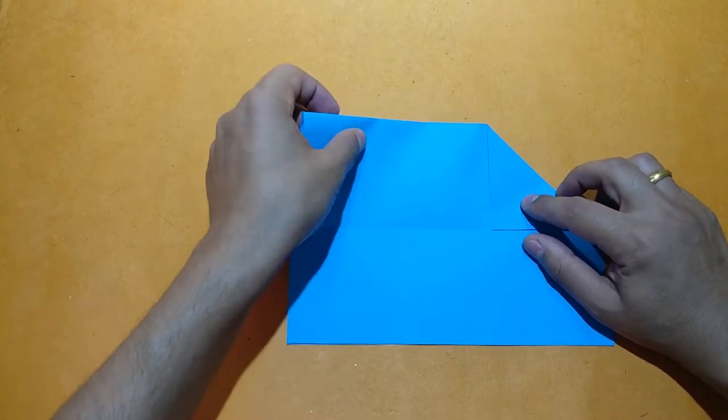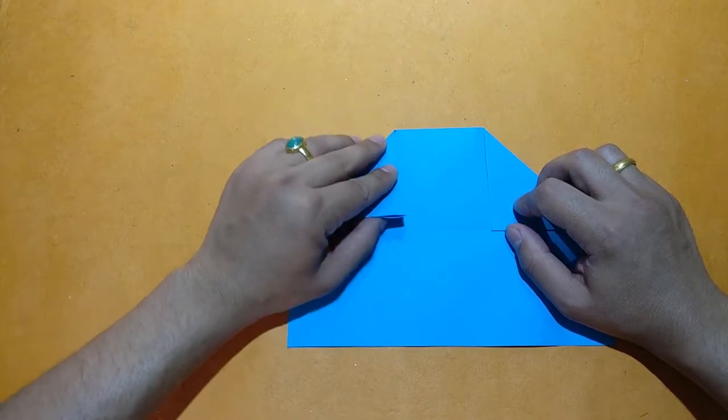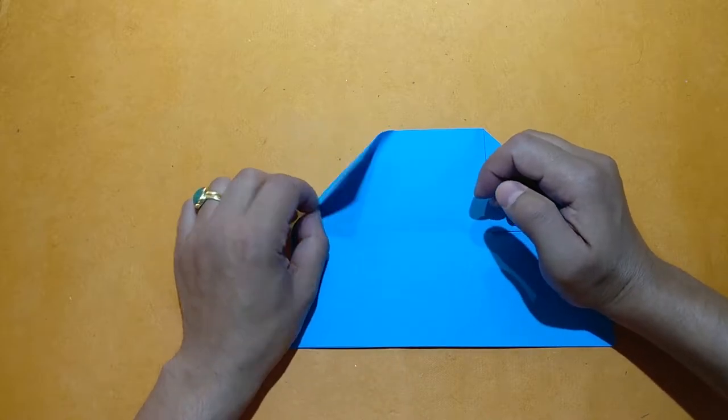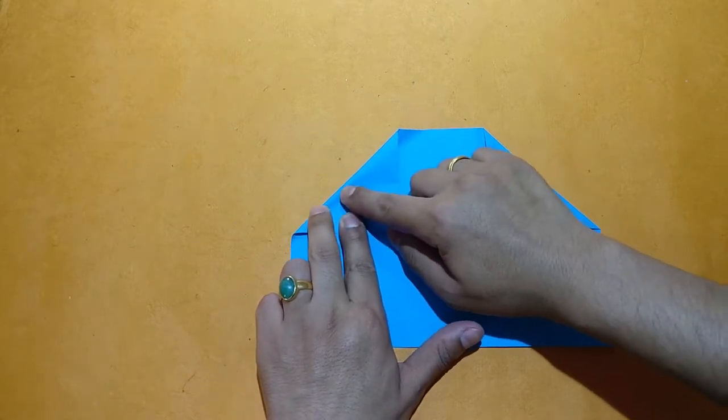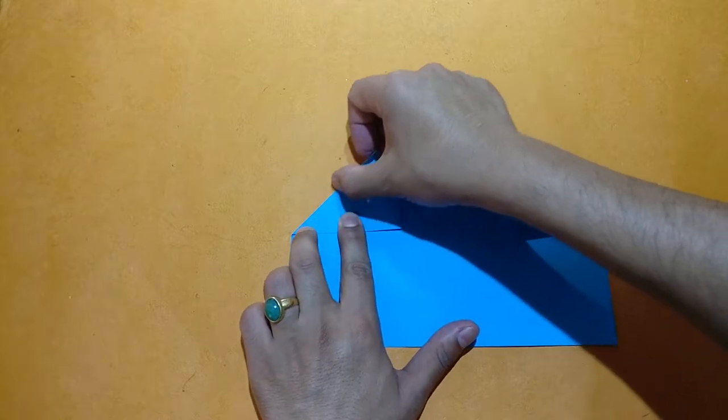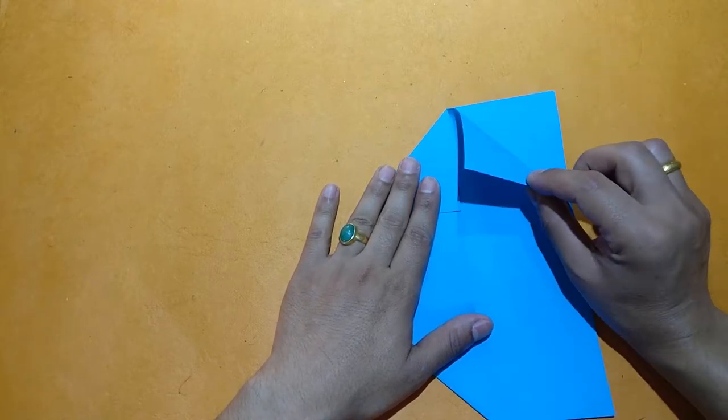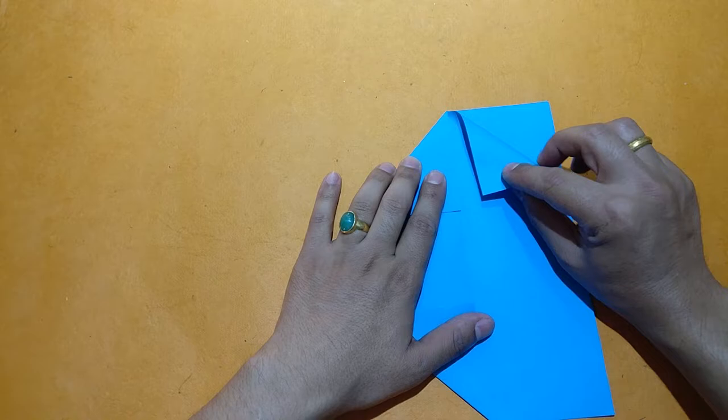Repeat the process on the other side. Now turn the paper and take only one layer like this and make a triangle.